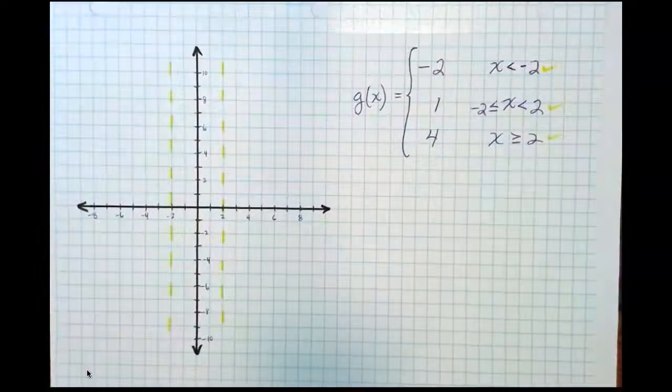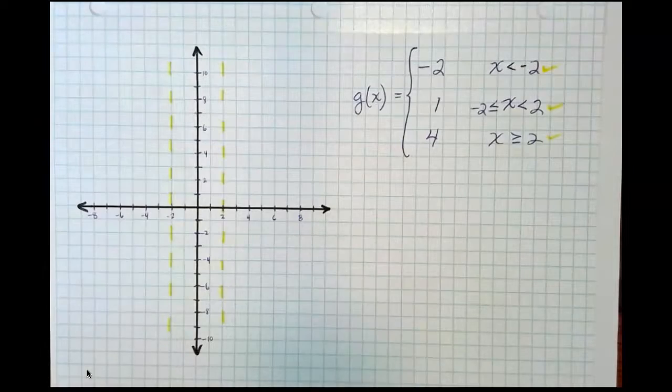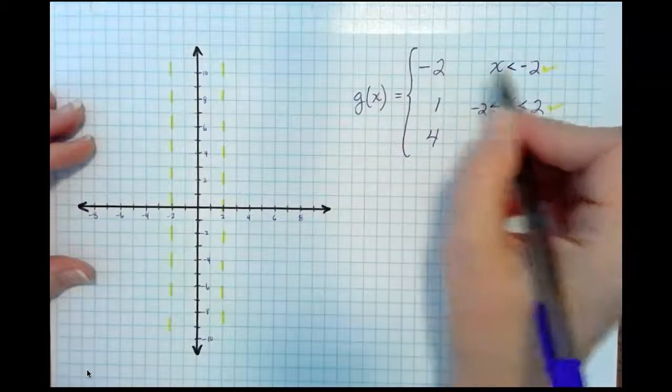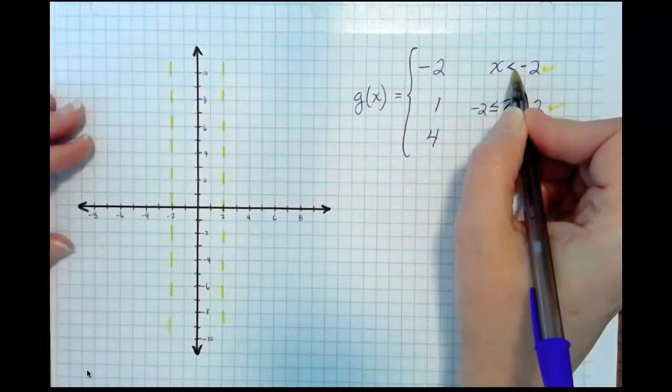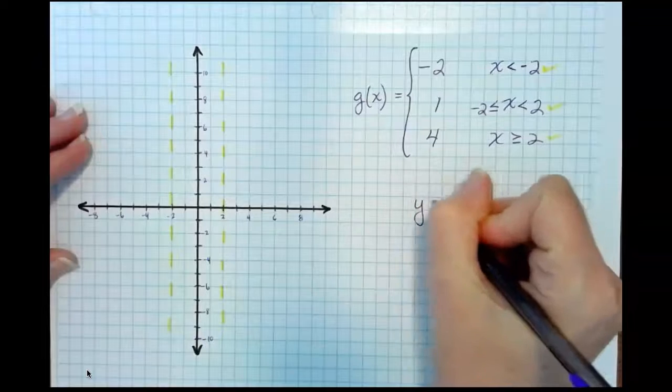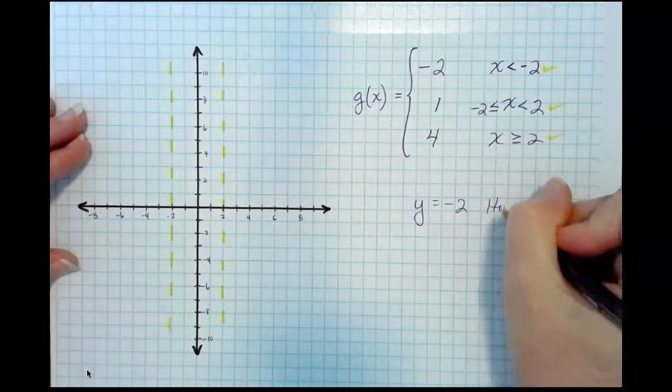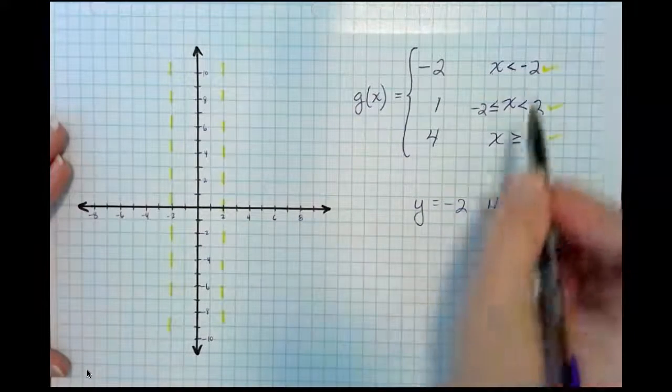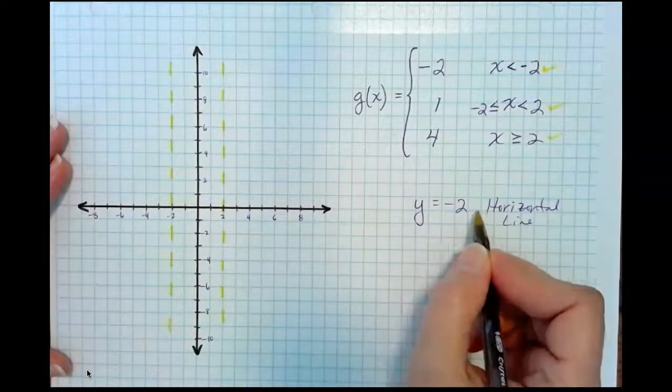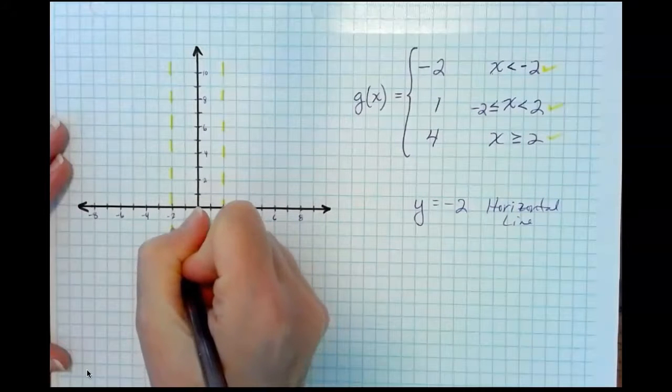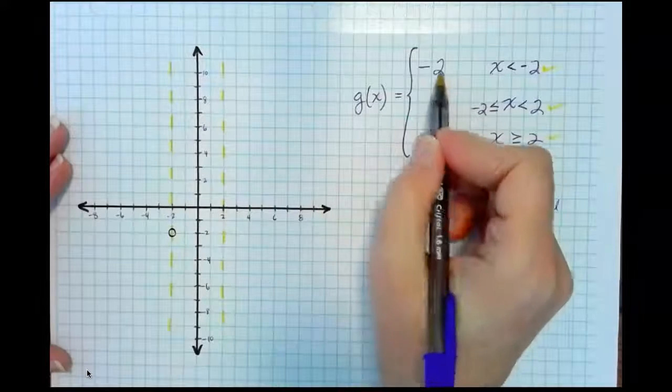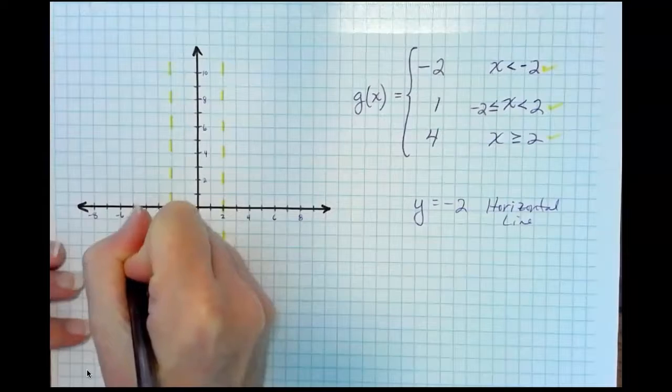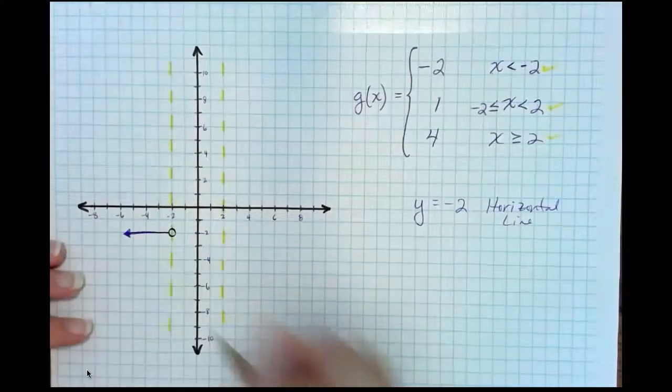Now, these functions are a little bit different. These are all constant functions. So, g of x is equal to negative 2 when x is strictly less than negative 2. So, think about it. y equals negative 2 is a horizontal line. It's just a horizontal line here. So, when we are strictly less than negative 2, we're just at y equals negative 2. So, we have an open circle at negative 2 because this is strictly less than. But, the function starts out looking something like that.